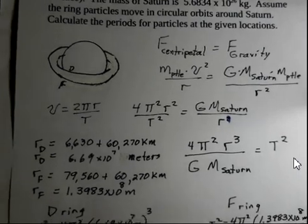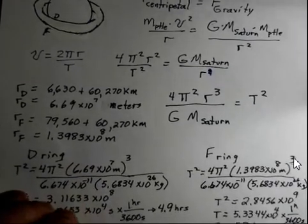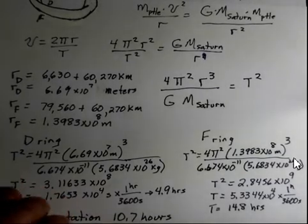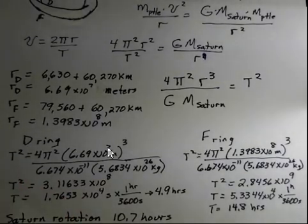So we have the numbers. It's time to go ahead and do the calculation. I'm doing them kind of side by side here. So for the D ring, the value we put in for r is 6.69 times 10 to the seventh. That's obtained up here. And that's going to be cubed. And we're dividing by capital G gravitational constant and by the mass of Saturn. And similar calculation over here. It's just that the r value is different for the F ring, 1.3983 times 10 to the eighth meters. That gets cubed.